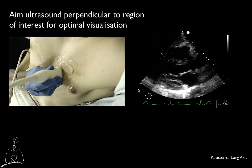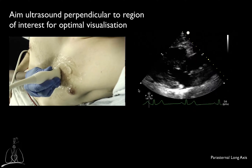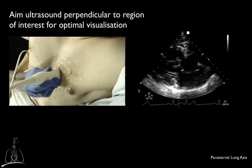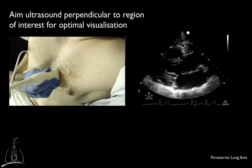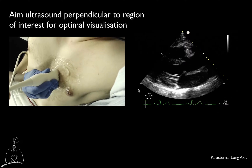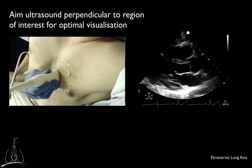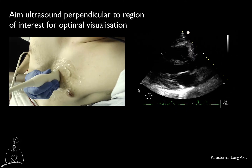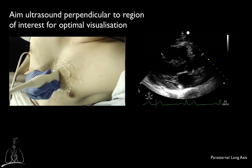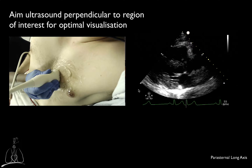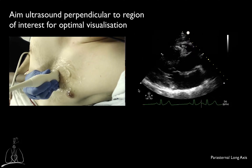Keep in mind that the best resolution for each structure is obtained when the ultrasound beam, and therefore the transducer footprint, is perpendicular to the region or structure of interest. Therefore, the best image quality for a structure may not be obtained with the transducer perpendicular to the skin, but with a slight tilting and/or sliding of the transducer within the same intercostal space.